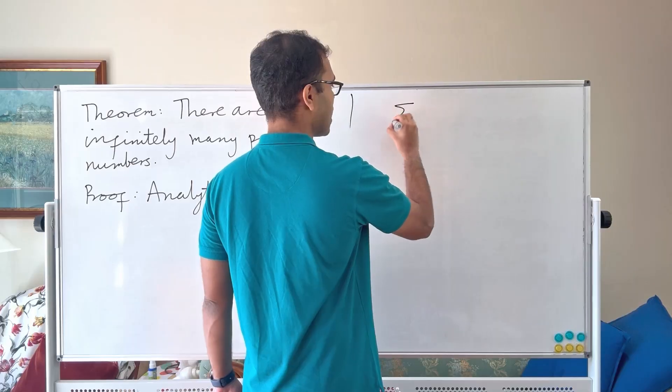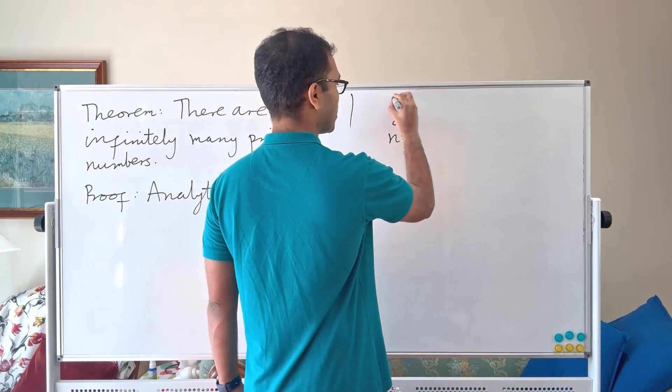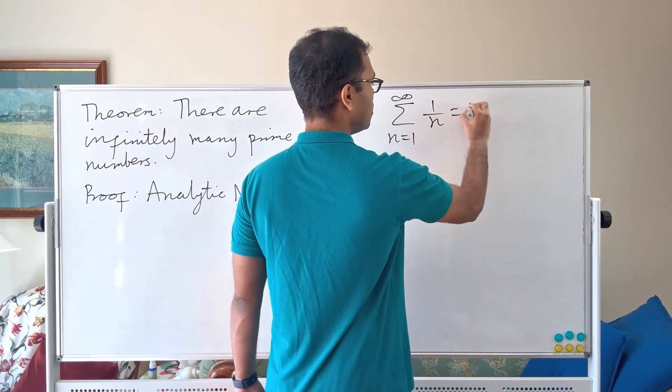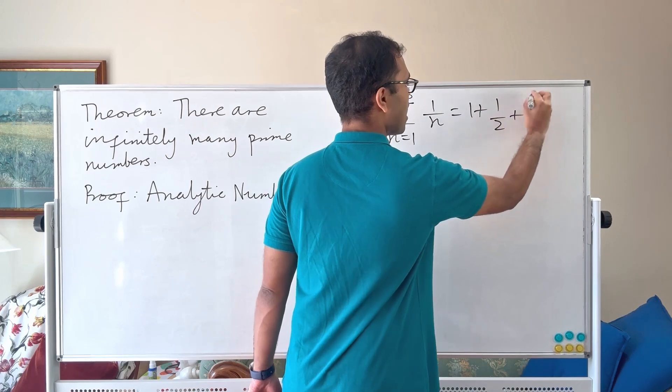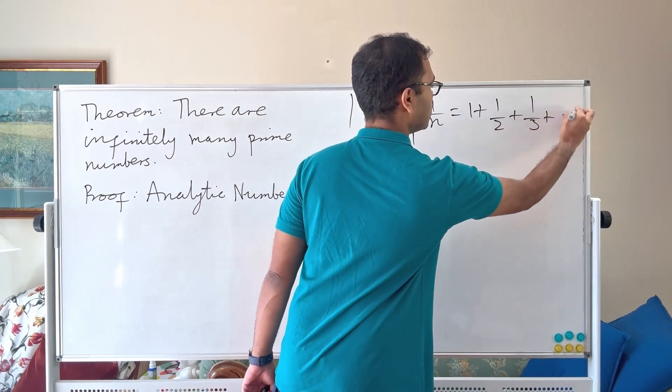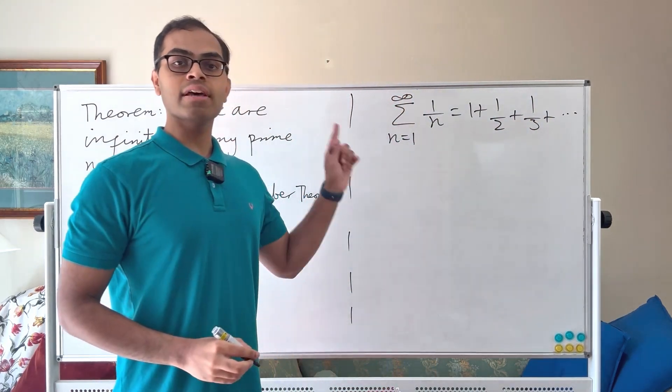We're going to start off with this following sum which is sum n varies from 1 to infinity of 1 over n which is nothing other than 1 plus half plus one third etc. This is a very famous sum. It's called the harmonic series.